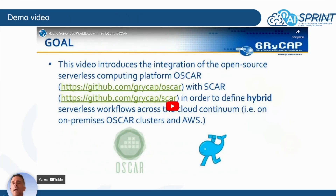Now let's take a look at this demo video, which will show the integration between the OSCAR platform and the SCARP tool in order to define hybrid serverless workflows across the cloud continuum.